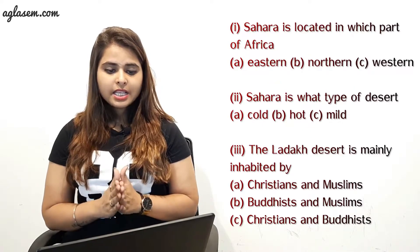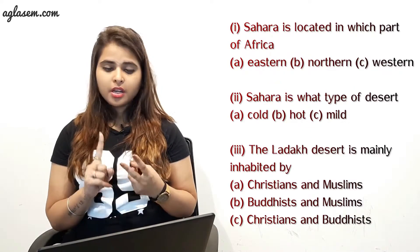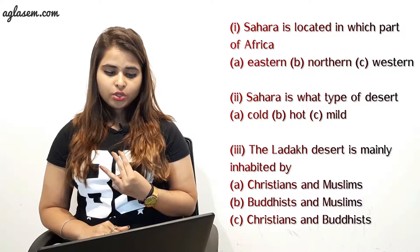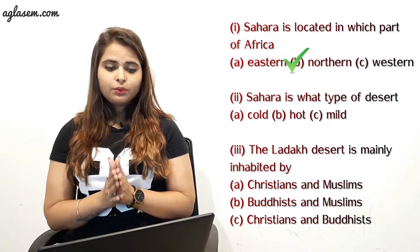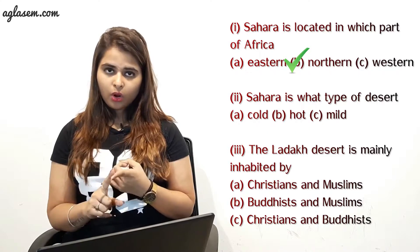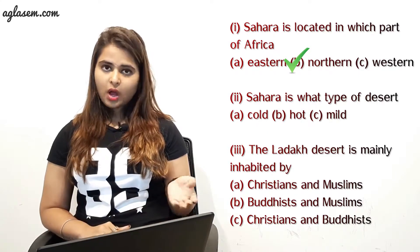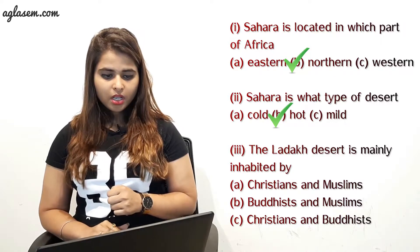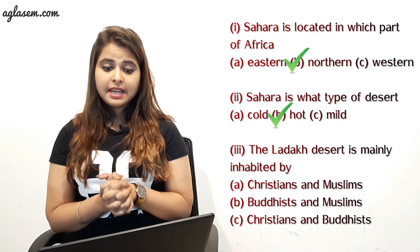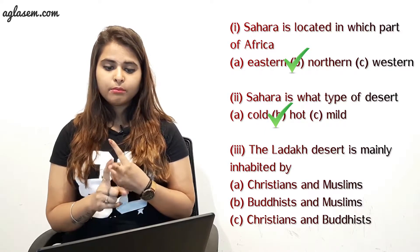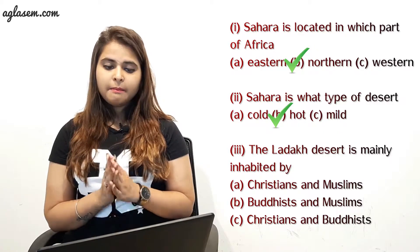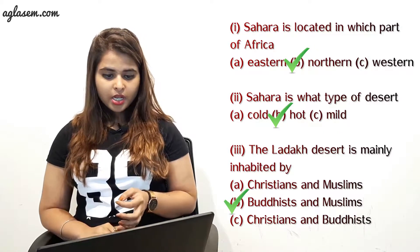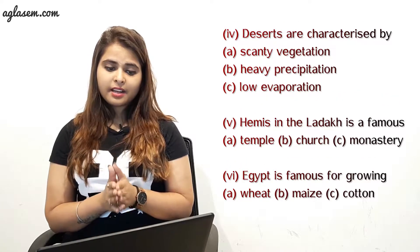The second question is: tick the correct answer. Part 1 — Sahara is located in which part of Africa? A) Eastern, B) Northern, C) Western. The answer is B) Northern. Part 2 — Sahara is what type of desert? A) Cold, B) Hot, C) Mild. The answer is B) Hot. Part 3 — Ladakh desert is mainly inhabited by? A) Christians and Muslims, B) Buddhists and Muslims, C) Christians and Buddhists. The answer is B) Buddhists and Muslims.